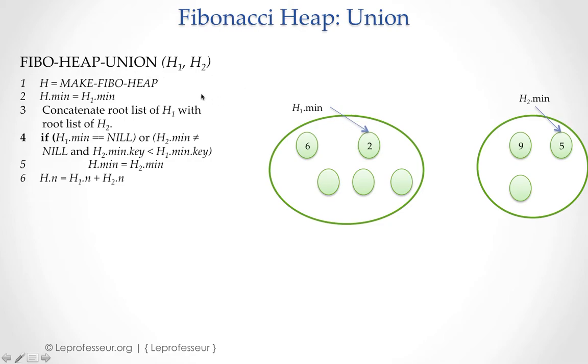Now in this algorithm we discuss how we can make a union of these two heaps. Line number 1 and 2, basically line number 1 makes an empty heap H. It makes an empty heap, there is nothing here.